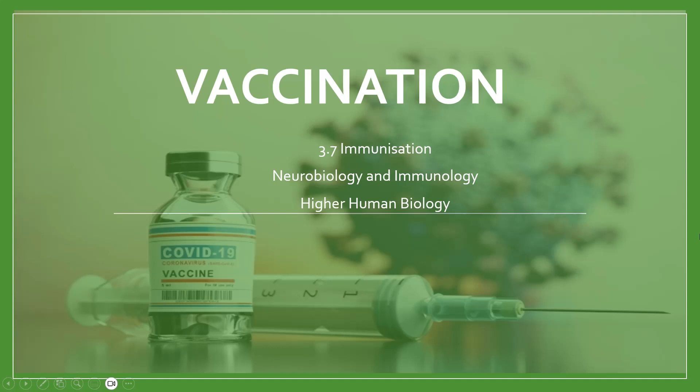In the previous two key areas we looked at how the immune system protects us from pathogens by making the B and T lymphocytes and building up memory cells. In this one we're going to take a look at what a vaccine is and how it also helps to protect us from these pathogens.